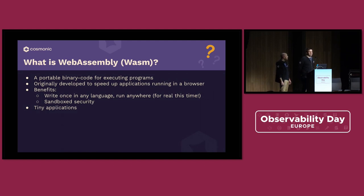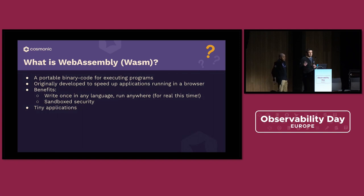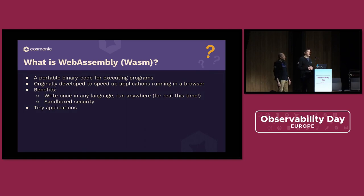WebAssembly is a binary code format that's designed for executing programs. It was originally designed for the browser. The idea was that as applications in the browser start getting bigger and bigger, there are some limitations we're going to run into with JavaScript alone. So the idea was: what if we could bring more performant languages into the browser — things like Rust, C, Go — and actually be able to run those programs inside of the browser?